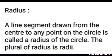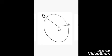Radius: A line segment drawn from the center to any point on the circle is called a radius of the circle. The plural of radius is radii. In the figure, the line segment OA is a radius of the circle. Line segment OB is also a radius of the circle.